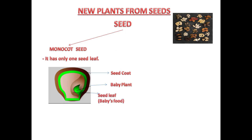The seed leaf is the food of the baby plant. As long as the baby plant does not grow green leaves, it depends on the seed leaf. Examples of plants having monocot seeds are wheat, maize, and rice. Here you can see the picture of wheat, maize, and rice seeds.